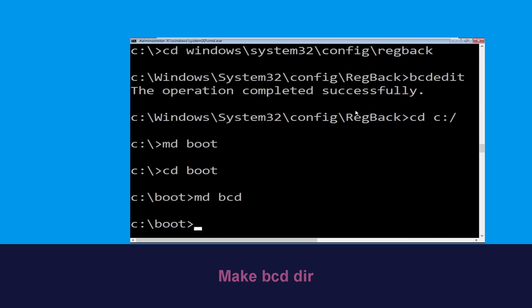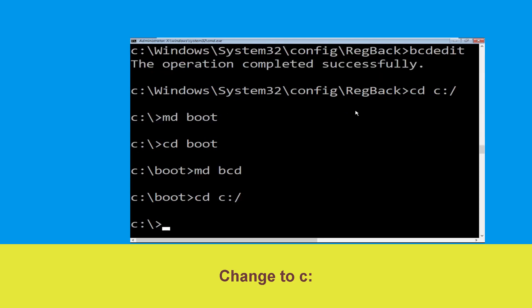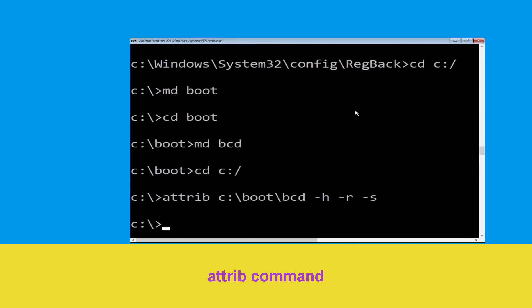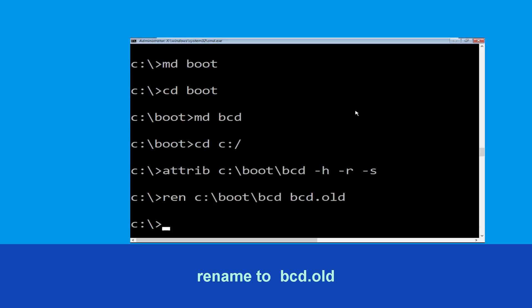Type cd c:\ and hit Enter. Then type attrib c:\boot\bcd -h -r -s and hit Enter. Now execute the command: type ren c:\boot\bcd bcd.old, then simply hit Enter to execute this command. Once done, move to the next command.